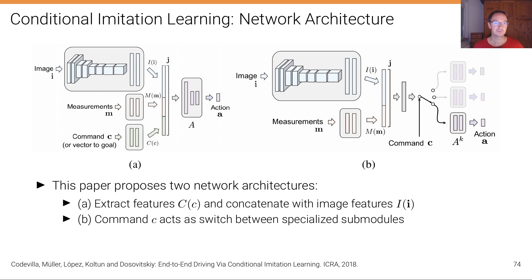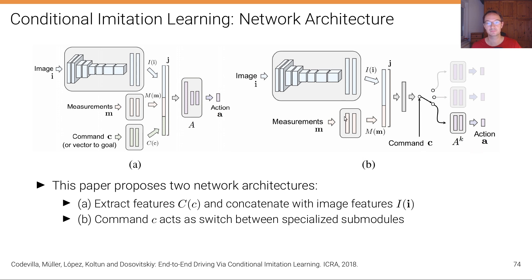The original ICRA 2018 paper describes two network architectures. The first, on the left, has an image encoder, measurements encoded with a shallow MLP, and the navigational command; these are concatenated and fed into another network that predicts the action. On the right, only the image and measurements are concatenated, and then the command selects between three different specialized sub-networks that return the action based on which sub-network was activated by the discrete conditional command.